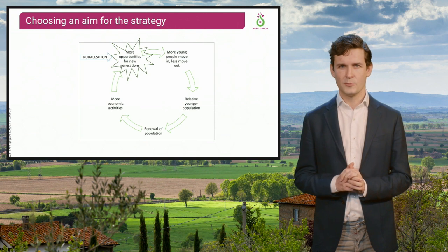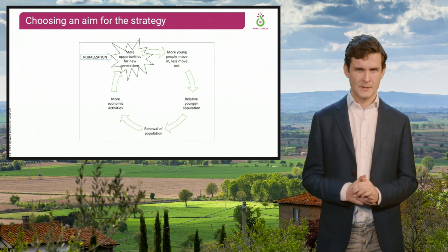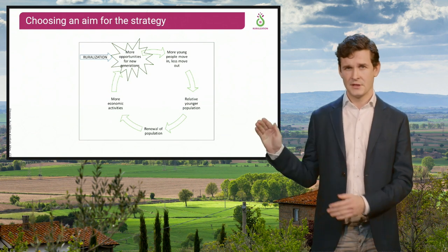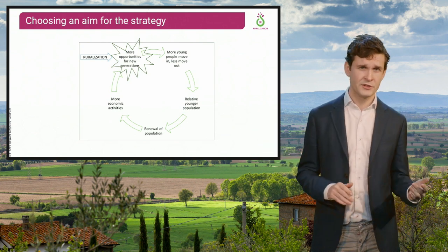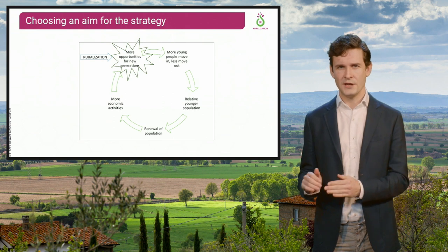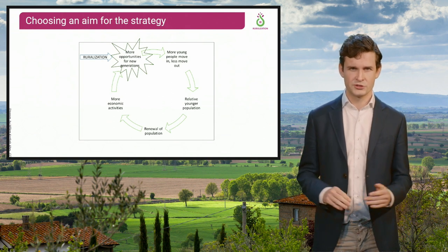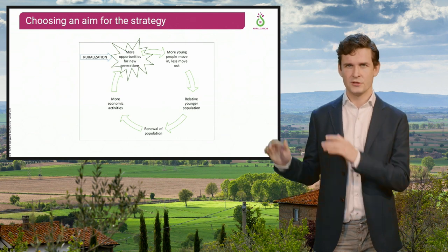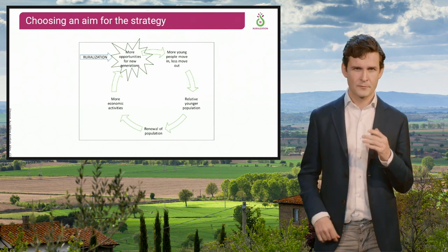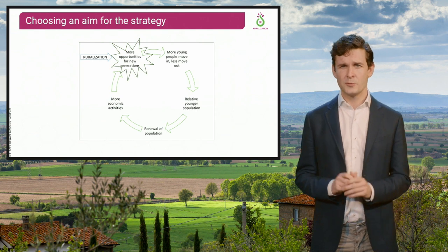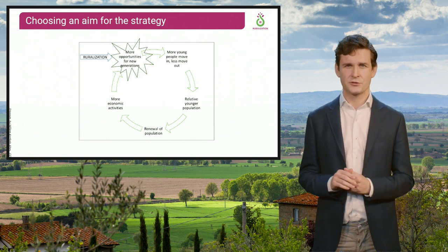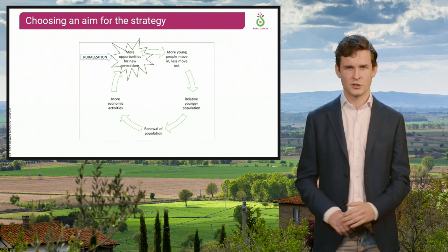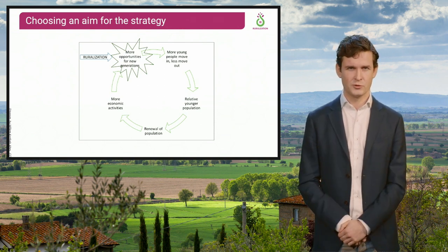Let's look at an example on how to find the strategic aim. In many regions we can see a negative spiral of rural development. There is a lack of opportunities for new generations, who then move away to urban regions, which results in an aging population and even less opportunities for young generations. You have seen this graph before. So the strategic objective in this case is to create more opportunities for them, in order to flip this negative spiral and start a positive process of rural development.